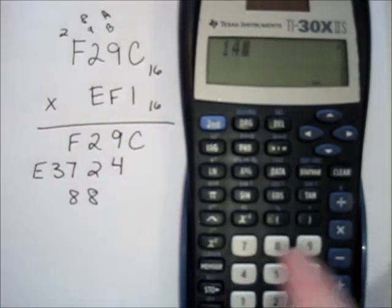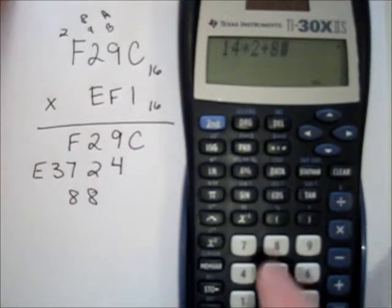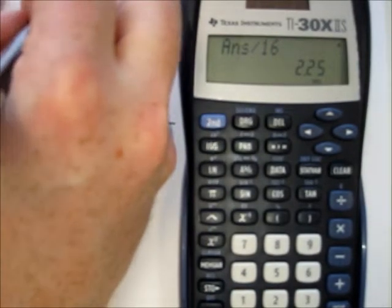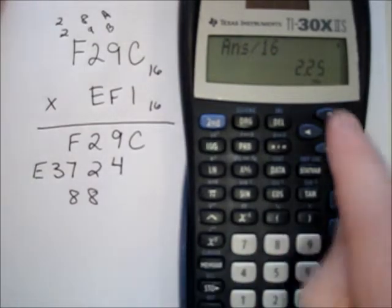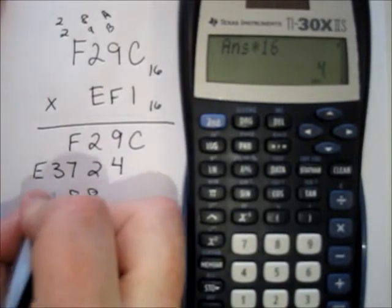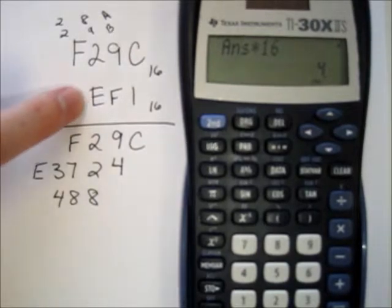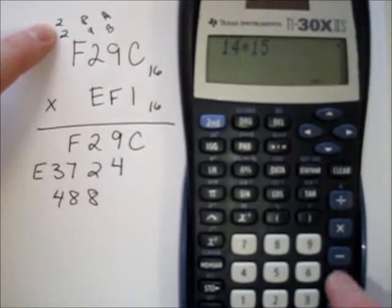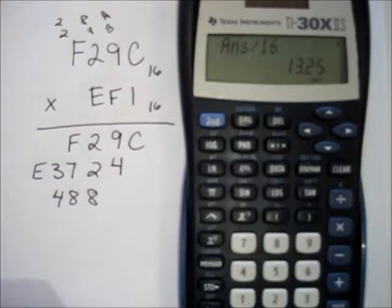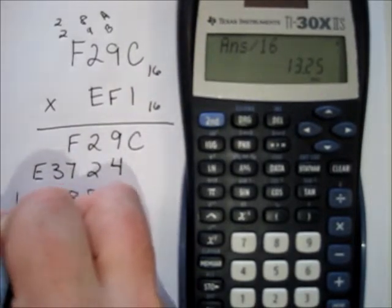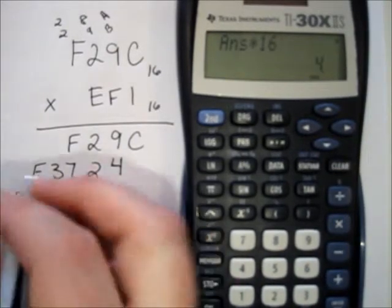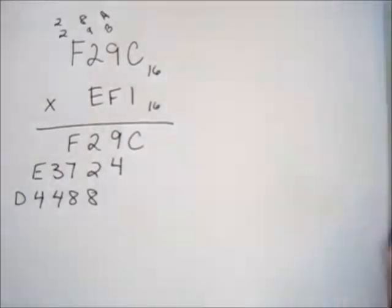Fourteen times 2 plus 8 carried gives 36. Divide by 16 to get 2.25 — carry 2, subtract and multiply by 16 for remainder 4. Then 14 times 15 plus the 2 carried is 212. Divide by 16 to get 13.25 — thirteen is the letter D. Subtract 13 and multiply 0.25 by 16 to get remainder 4.